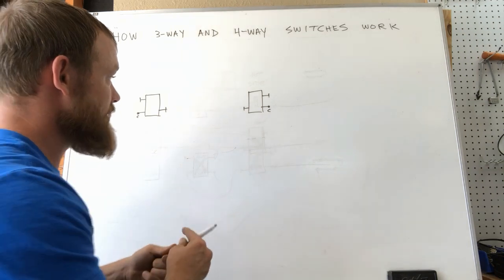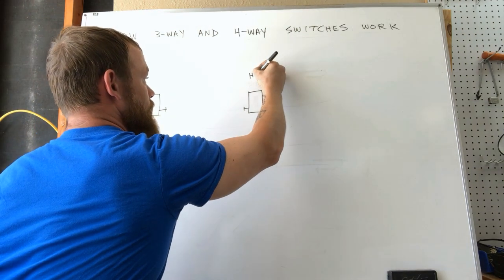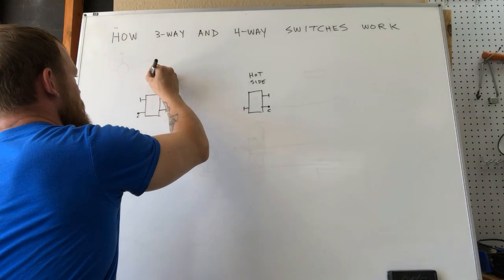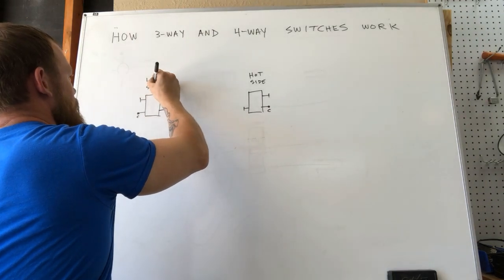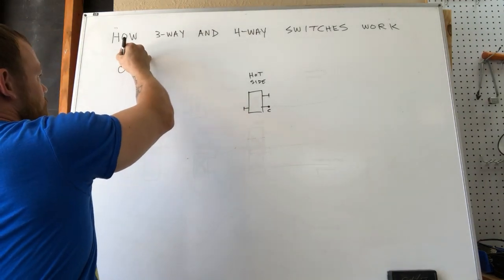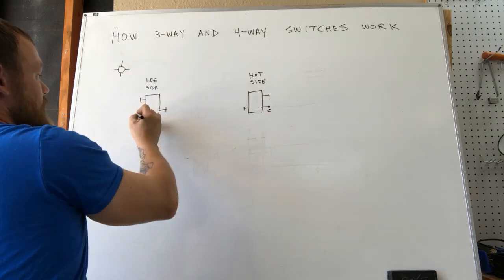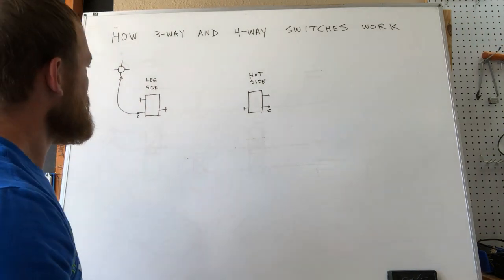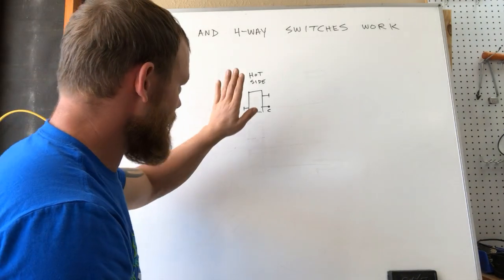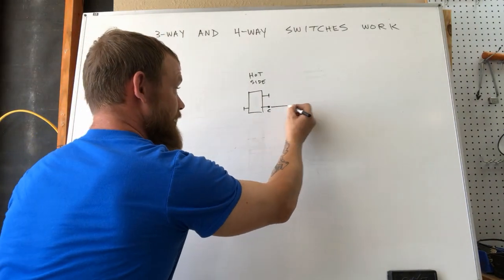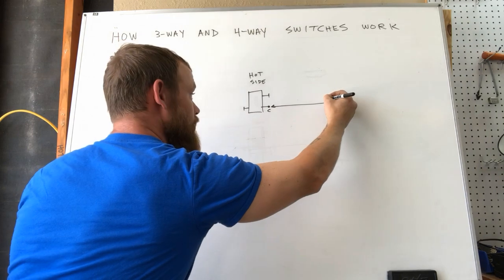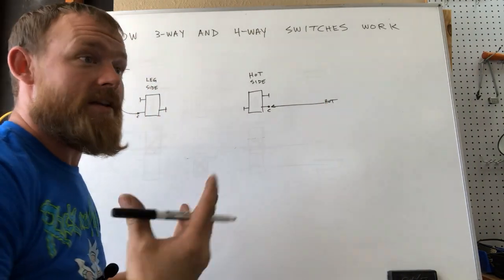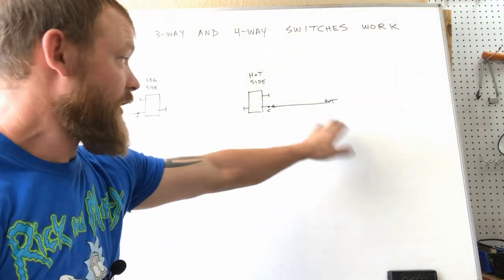So how a three-way works is we've got a hot side and we got a leg side. The leg side is where you're going to have your switch leg, which is a wire that goes from the device up to the actual light itself. Then the hot side is where your incoming hot is going to be from a panel or from another plug or whatever. That's where you're bringing the power into.